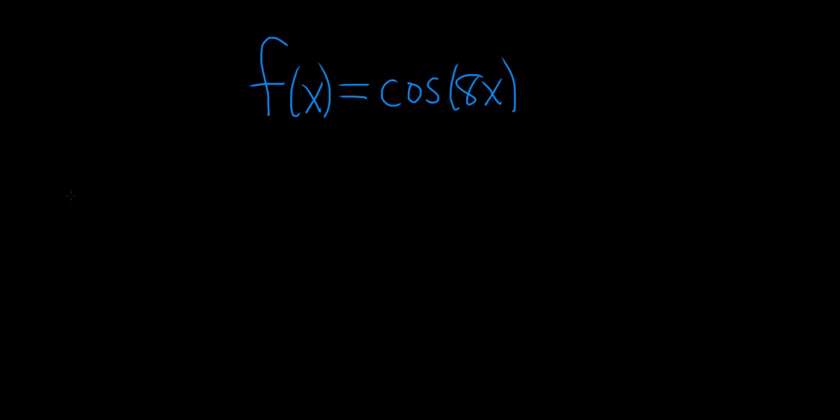So the Maclaurin series for cosine is equal to the infinite sum as n runs from 0 to infinity of negative 1 to the n. And cosine is an even function, so it only has even powers of x. So if you know that, you know that it's x to the 2n, because 2n is always even.